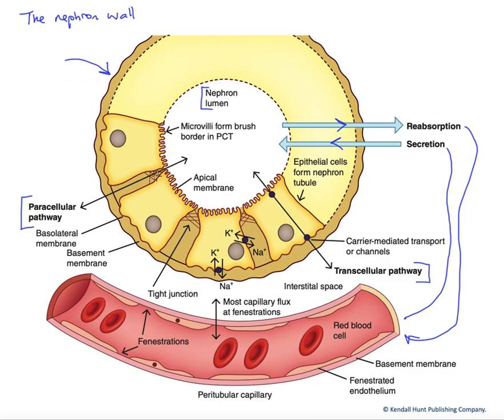The paracellular pathway is between the cells, and the barrier to movement across that pathway are these tight junction proteins shown here.